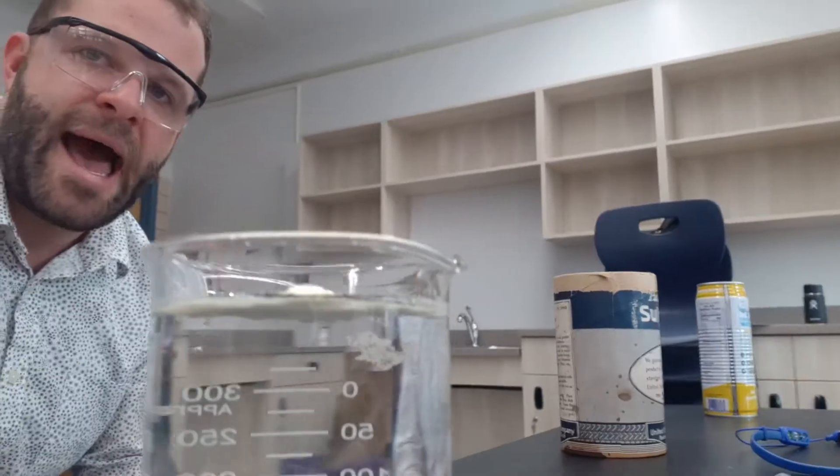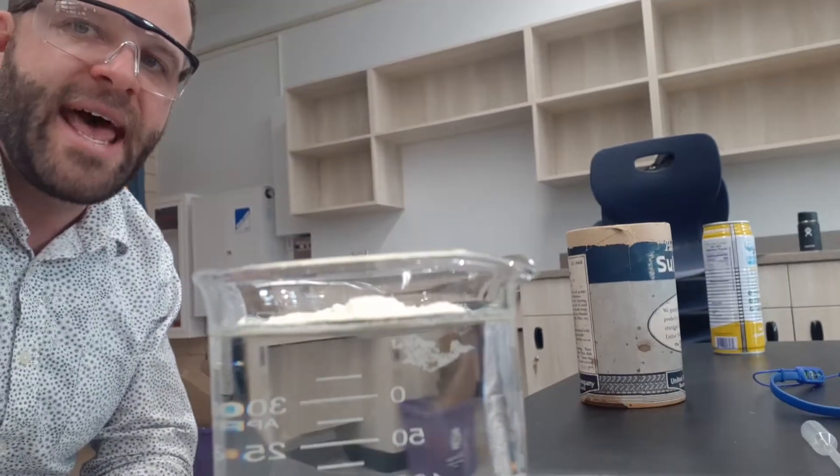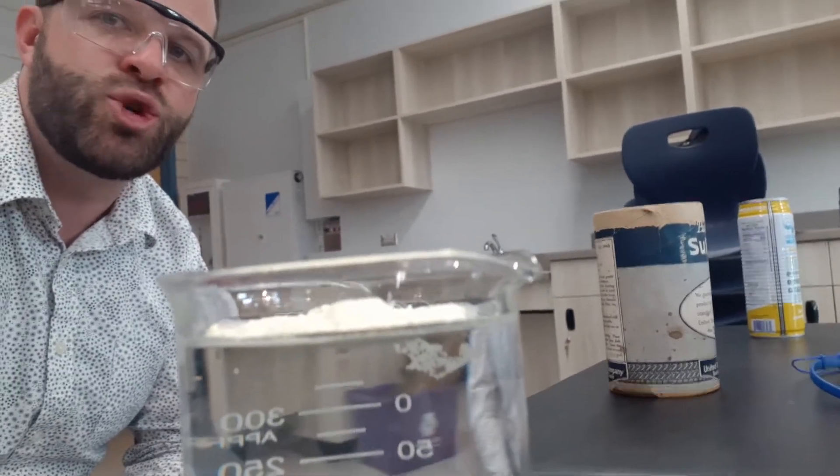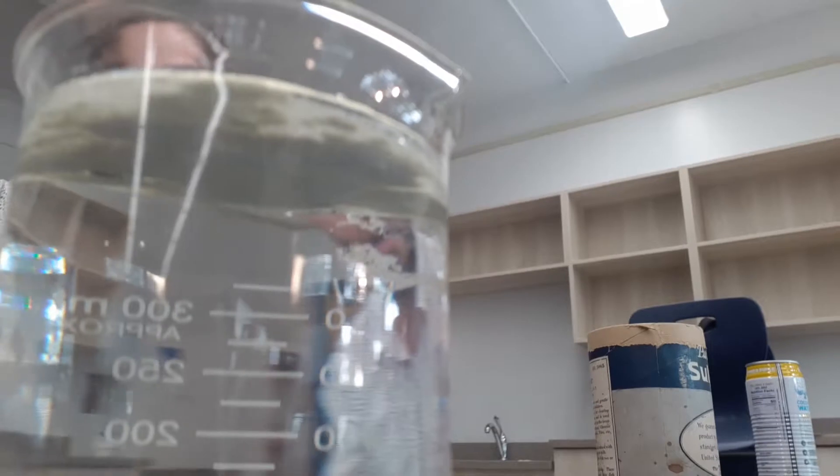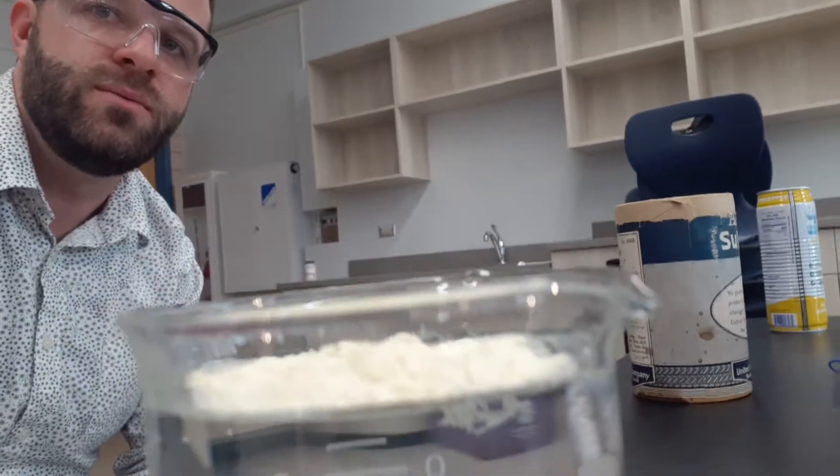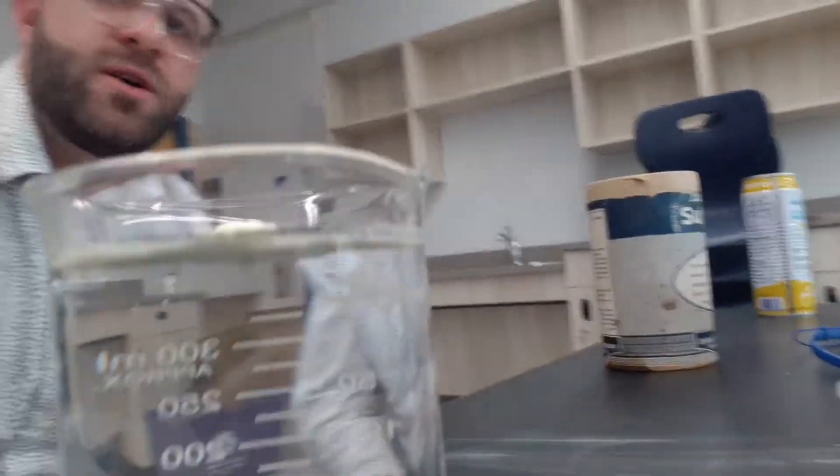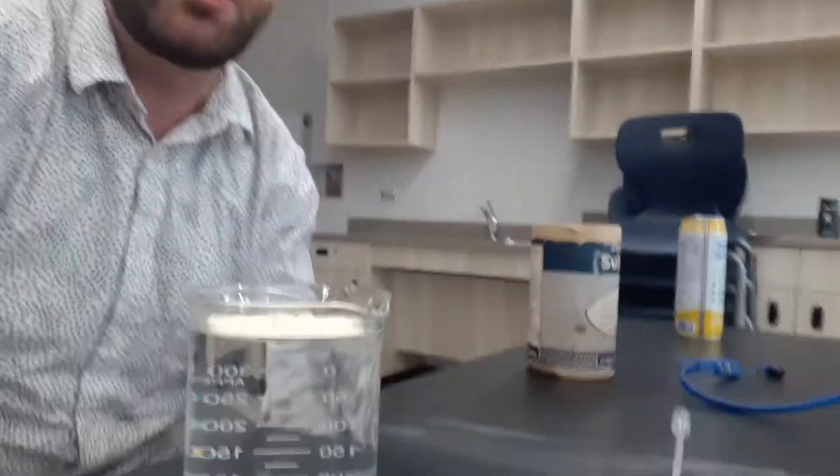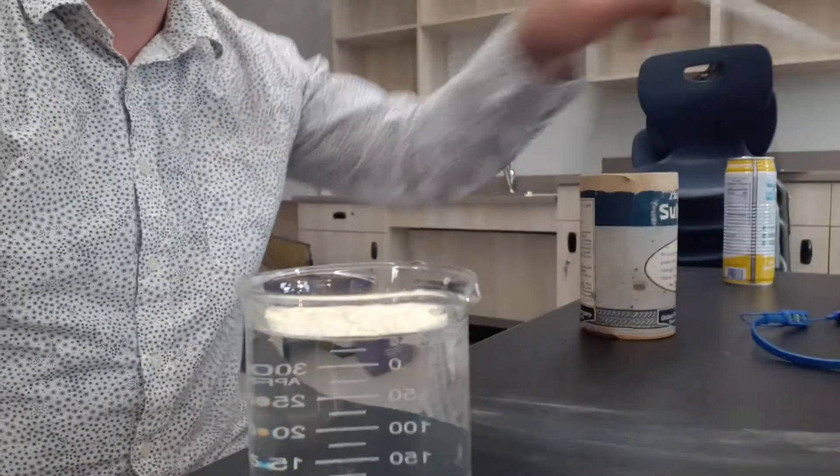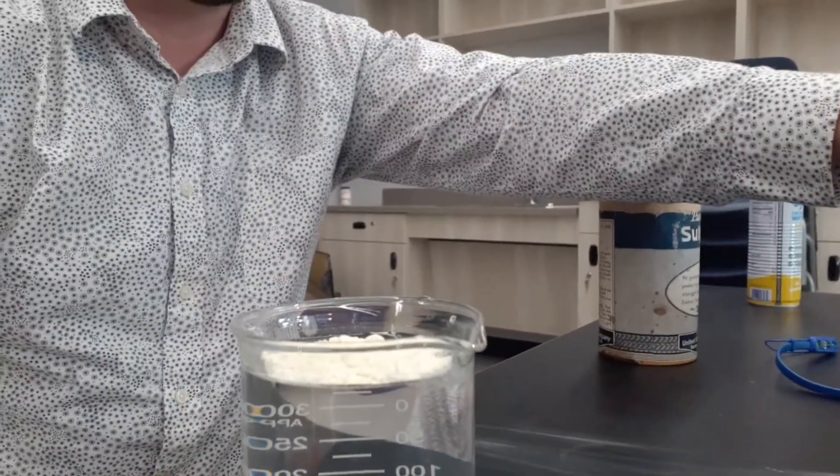So the water in this beaker is acting as a sort of net or like a trampoline that does not let the sulfur go through. So it's these attractions between water molecules that cause the sulfur to stay afloat.